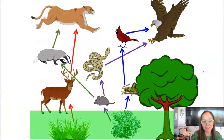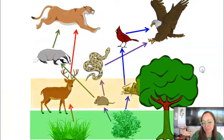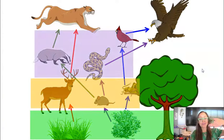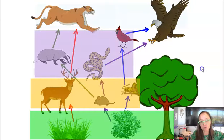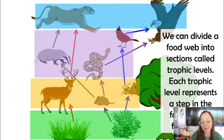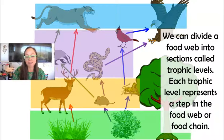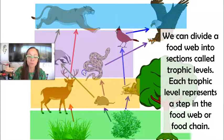Let's define our different trophic levels in a food web. We can divide our food web into different levels called trophic levels, and they each have a name. A trophic level is basically each step in a food chain or food web.